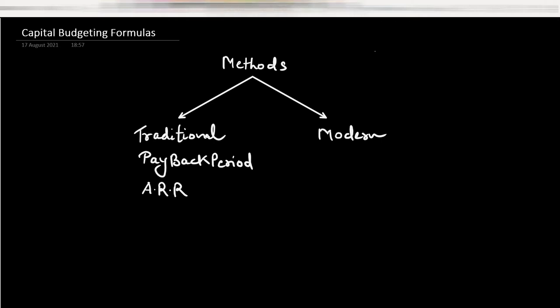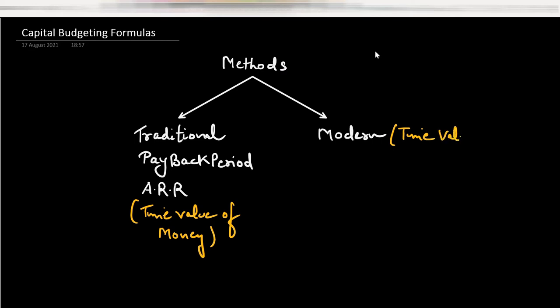The key characteristic of the traditional method is that it does not consider the time value of money — that is what makes it a traditional method.